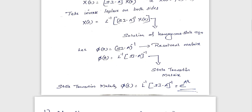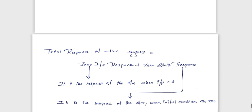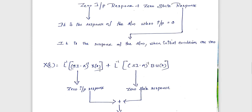That is all about the solution of state equations. It has two parts: the homogeneous state equation, where x(t) = L⁻¹{(sI−A)⁻¹}·x(0) with (sI−A)⁻¹ being the resolvent matrix and L⁻¹{(sI−A)⁻¹} being the state transition matrix; and the non-homogeneous state equation solution with both x(0) and U(s) terms. The zero-input response is L⁻¹{(sI−A)⁻¹}·x(0).